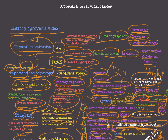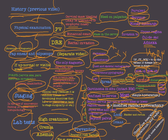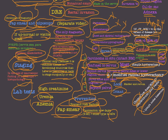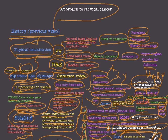In summary, in this video I covered: the approach to cervical cancer including history from the previous video; physical examination (PV and DRE); Pap smear and colposcopy; biopsy; clinical staging by physical examination and non-invasive tests; the stages 0 through 4; treatment according to staging; spread of cervical cancer by local, lymphatic (pelvic and para-aortic — para-aortic being the most important prognostic factor), and hematogenous routes; lab tests including creatinine, uremia, and anemia; and prevention through Pap smear and HPV vaccination.